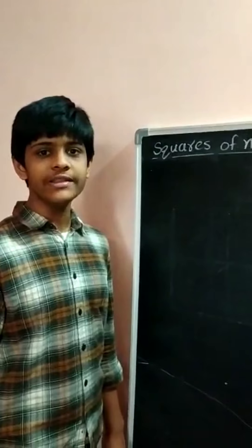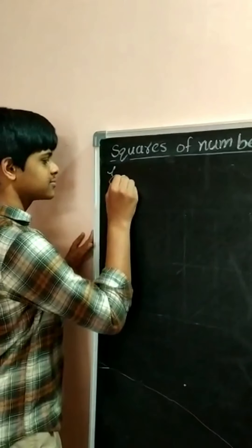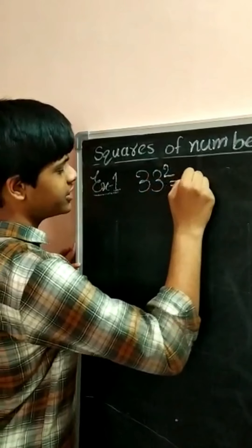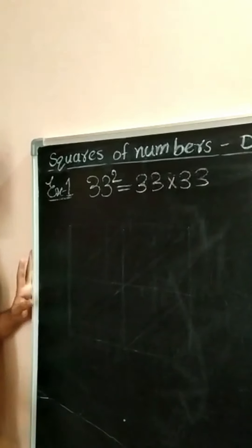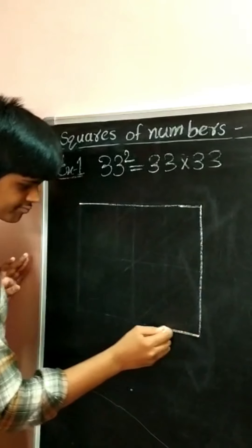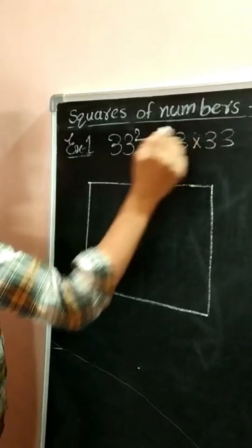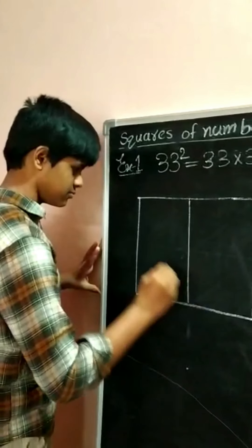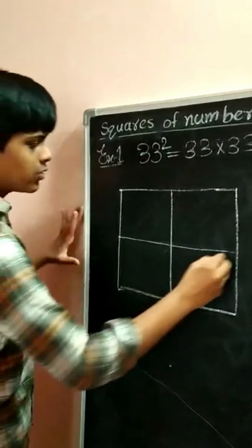We can find squares easily using this diagonal method. Example 1: 33 squared, which is equal to 33 into 33. Draw a square. Here the 2-digit number is multiplying with a 2-digit number, so make the square with 2 rows and 2 columns — totally 4 squares. Draw the diagonal to each square.